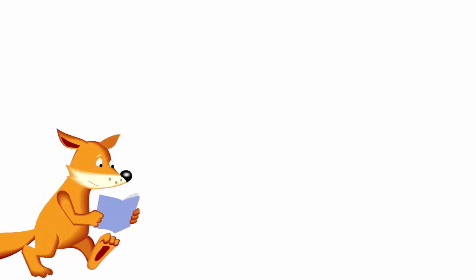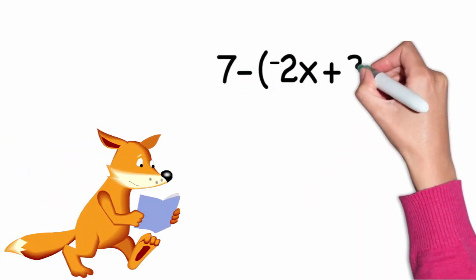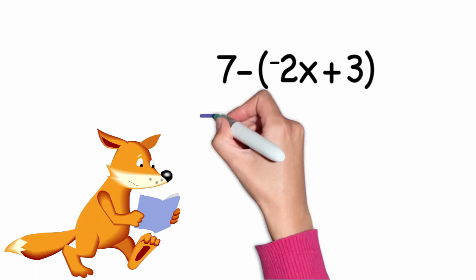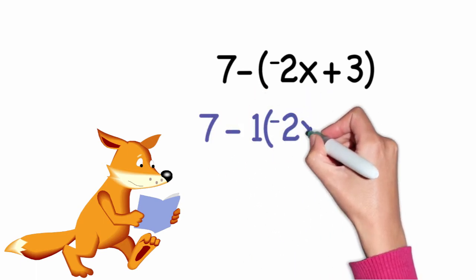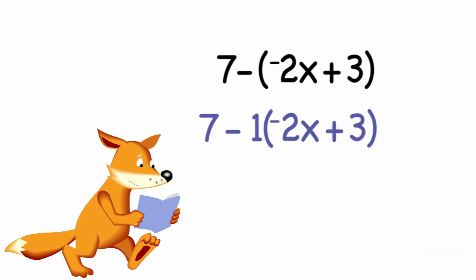Let's take a minute and relook at 7 minus the quantity negative 2x plus 3. I could have written a 1 in front of the parentheses, because if I multiply by 1, I haven't really changed anything. And then instead of saying subtracting 1, I could have said that's plus a negative 1.